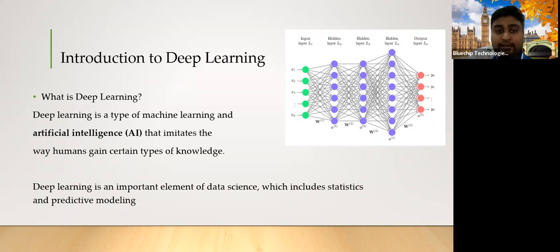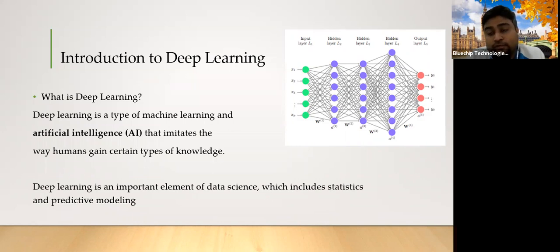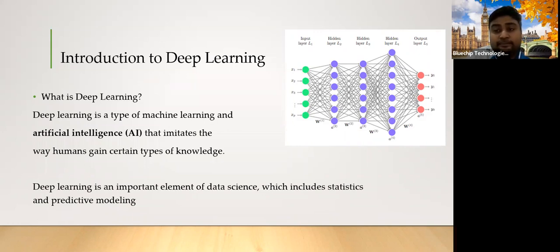Deep learning is quite a vast area that we can use for research purposes — a lot of research projects exist. Compared to machine learning, deep learning has high research capabilities; the majority of AI research in the world is happening in the deep learning space. Companies like Google are investing billions of dollars in deep learning — developing tools, infrastructure, and advanced mechanisms. TensorFlow, for example, is one of the main deep learning tools coming from Google.